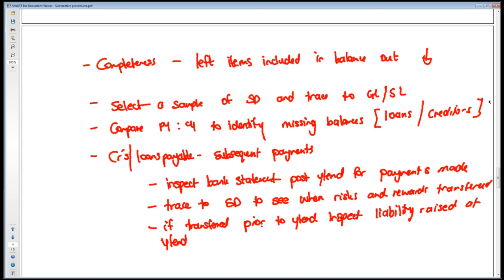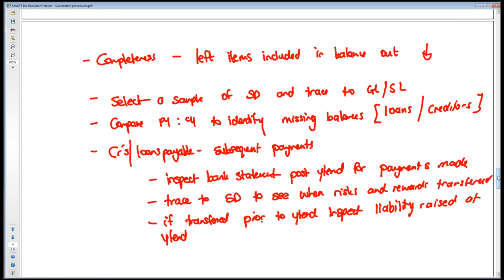If the payment relates to an invoice dated the same day as the payment, a liability should not have been raised at year end. But if this payment relates to an item where risks and rewards transferred before year end, go into the accounting records to see that a liability was raised. If there wasn't a liability raised, then they have not recorded all their liabilities — because even though they paid for it after year end, there was a liability at year end. Completeness is very much focused at your liabilities and creditors.